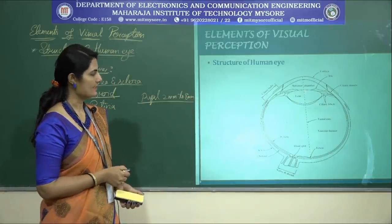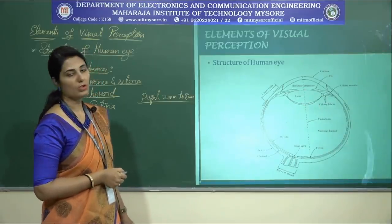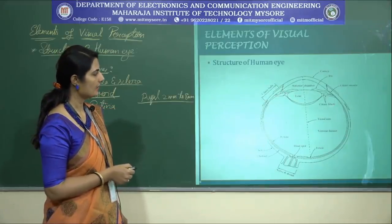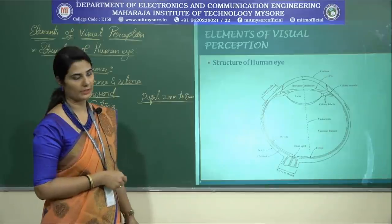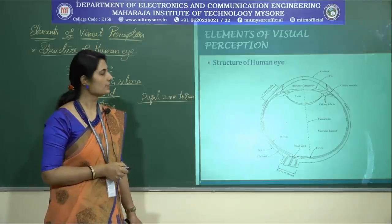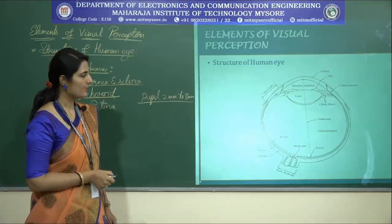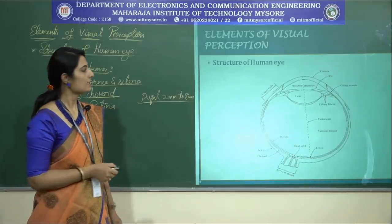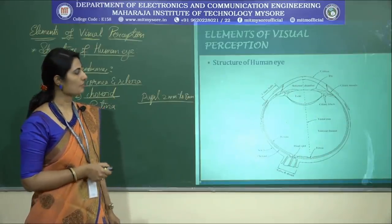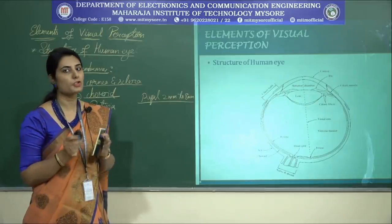The lens consists of concentric layers of fibrous cells suspended by fibers of the ciliary body. It contains 60 to 70 percent water and 6 percent fat, and more protein than any other part of the eye. The lens transmits about 8 percent of the visible light spectrum, and absorption is very high for shorter wavelengths.